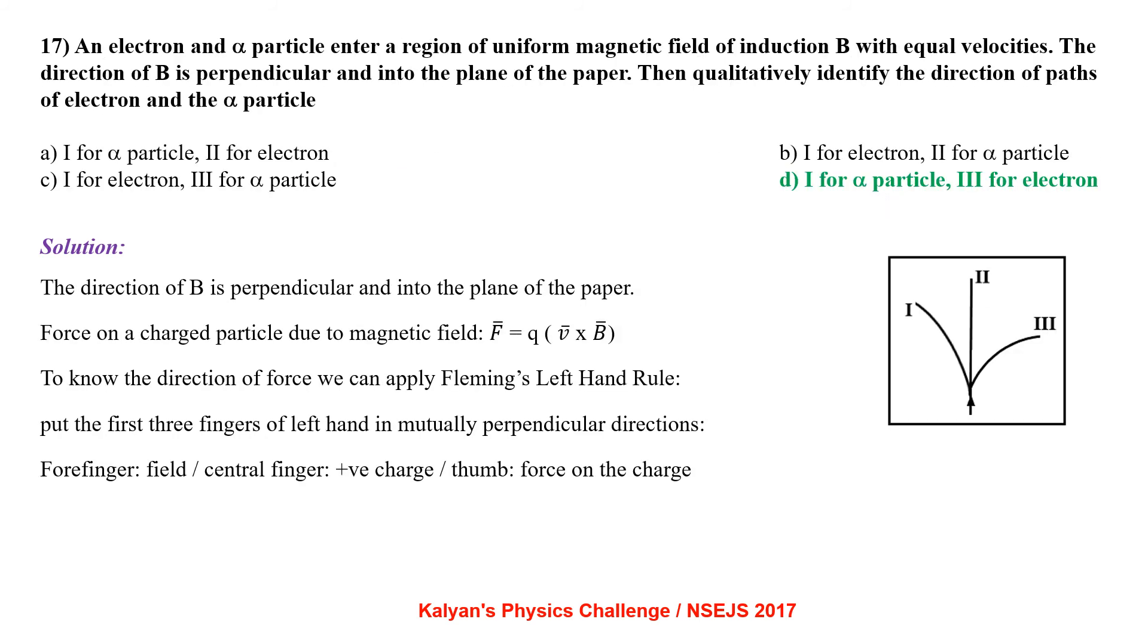An electron and alpha particle enter a region of uniform magnetic field of induction B with equal velocities. The direction of B is perpendicular and into the plane of paper then qualitatively identify the direction of paths of the electron and alpha particle. The direction of B is perpendicular and into the plane of paper. Force on a charged particle due to the magnetic field F bar equal to Q times V bar cross B bar.